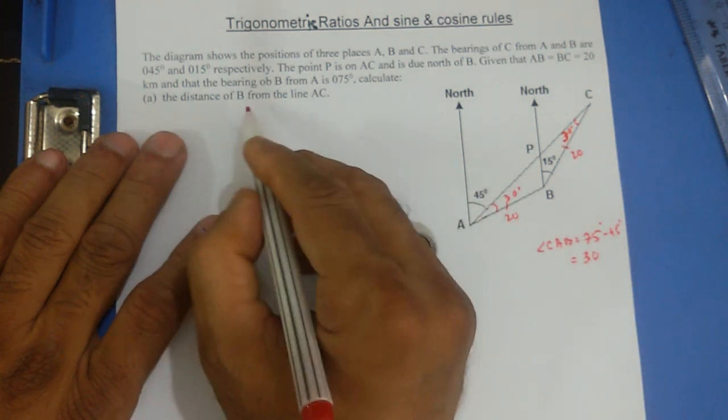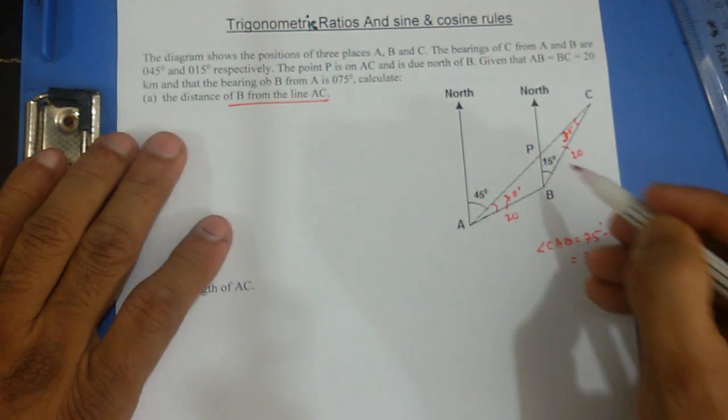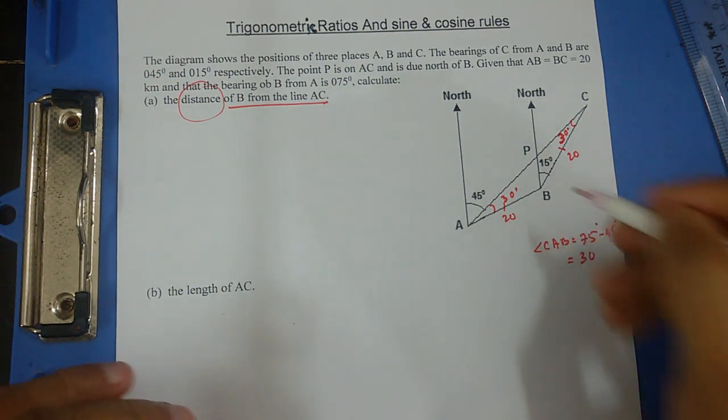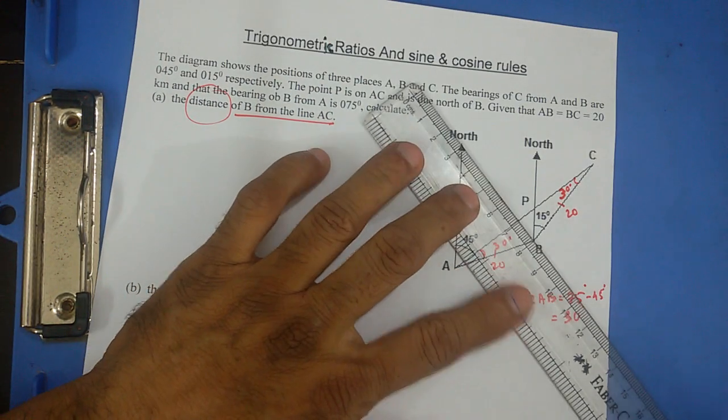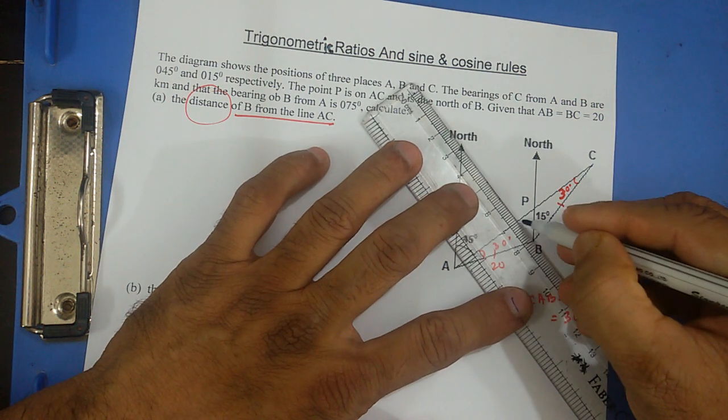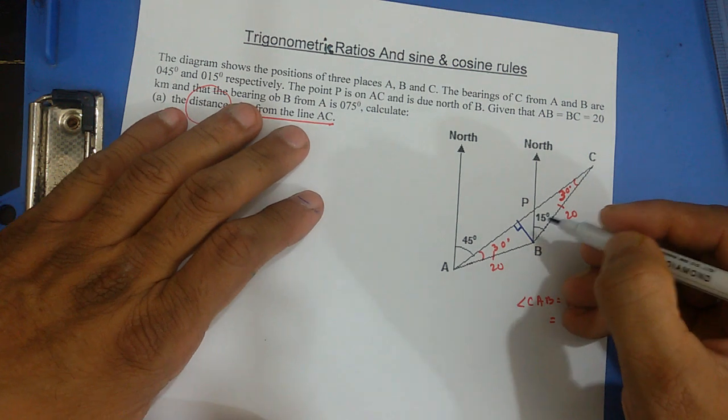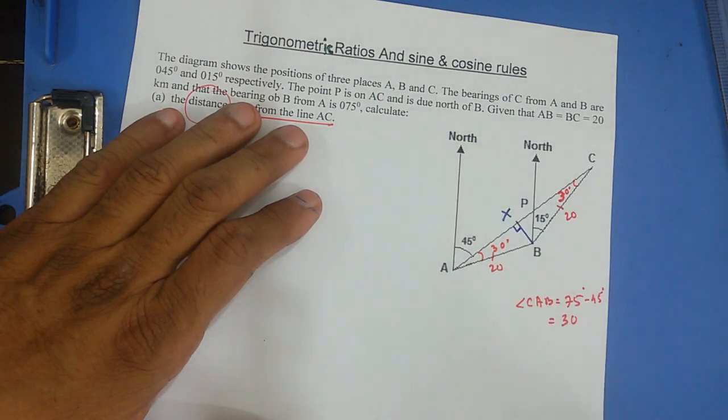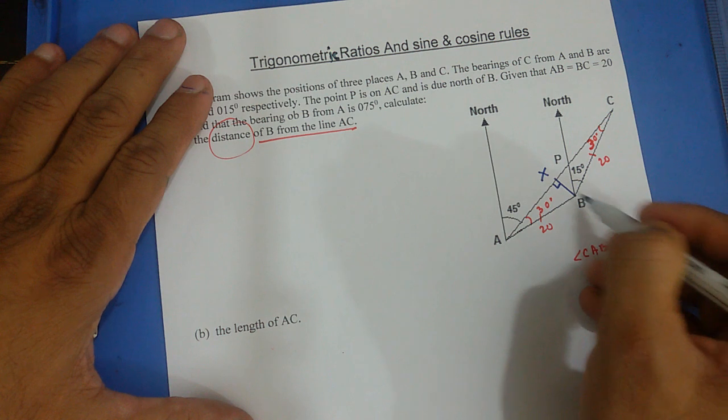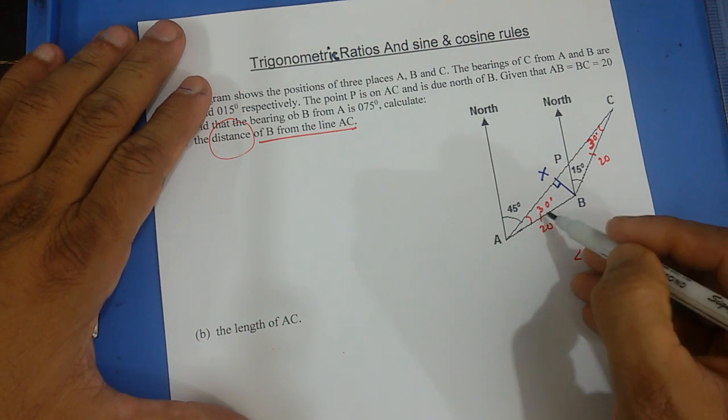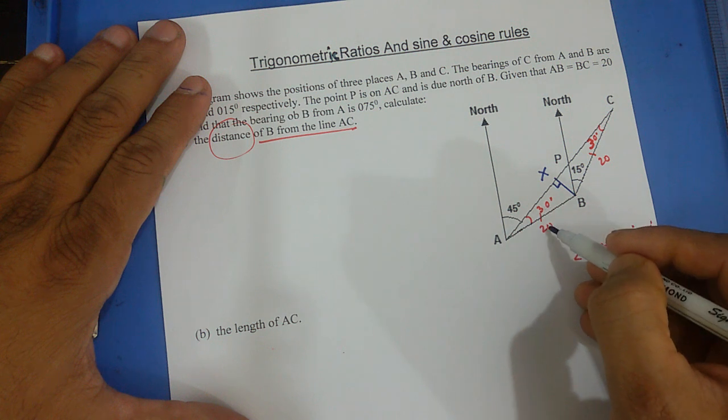The distance of B from line AC. Whenever they talk about distance, that means always perpendicular distance. So this perpendicular distance, they are always asking for this perpendicular distance. Let's name this X. So we are trying to find out this BX. Now, this does look like a right angle triangle and trigonometric ratio. I have angle and one side.